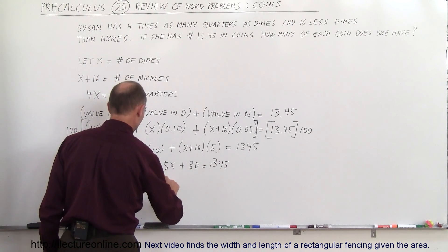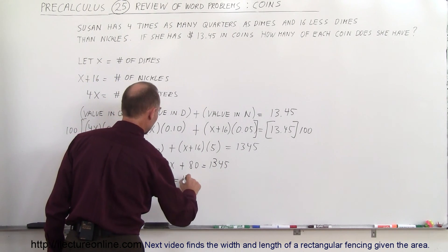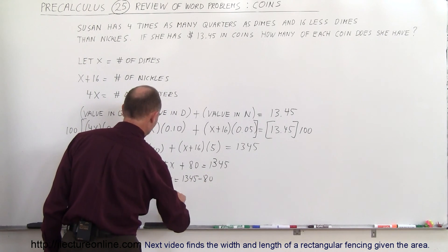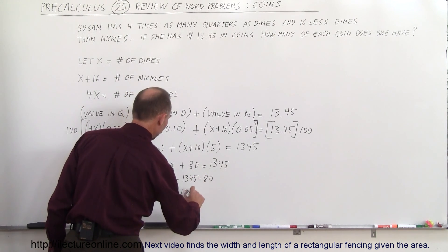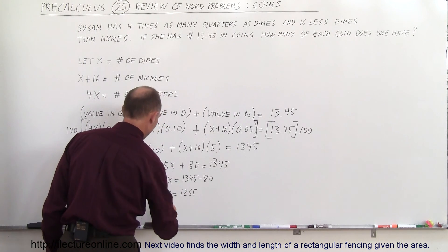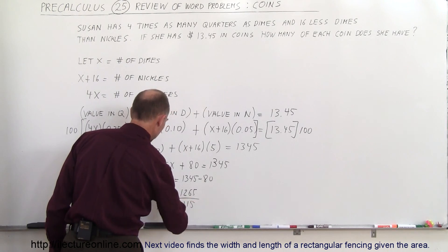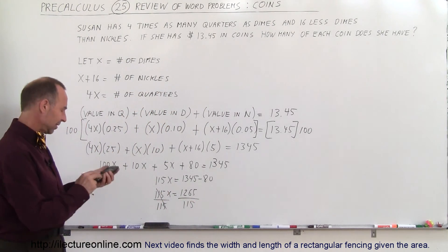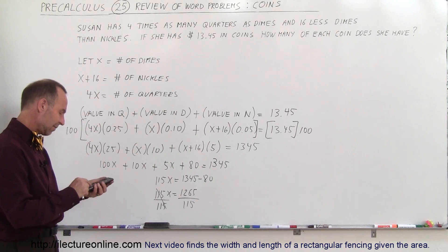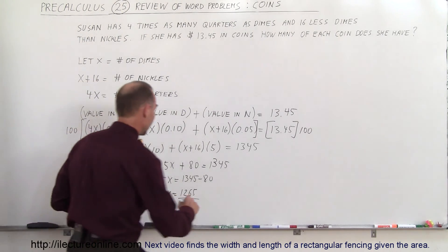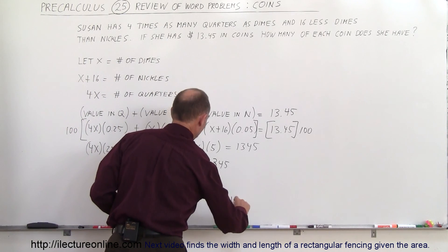So 115X is equal to 1,265. And finally, when we divide both sides by 115, X is equal to 1,265 divided by 115 equals 11. So X equals 11.